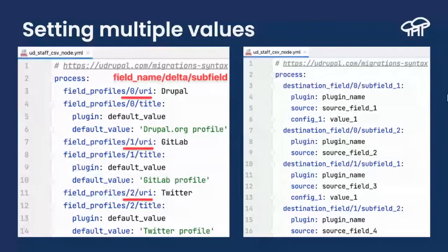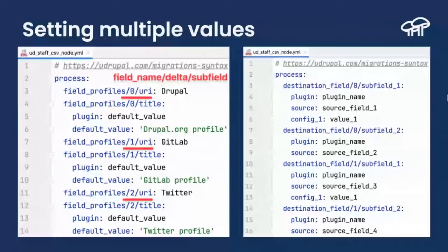You also need to know about how to set multiple values. Normally this is referred to as the delta, and the general syntax is machine name of the field, slash delta, slash subfield. You can manually specify the deltas like 0, 1, and 2, but you can also create process pipelines in which the deltas are not known in advance, so you can accommodate multi-value fields whether it is 1, 2, 3, 4, or even more values, making the migration more dynamic.